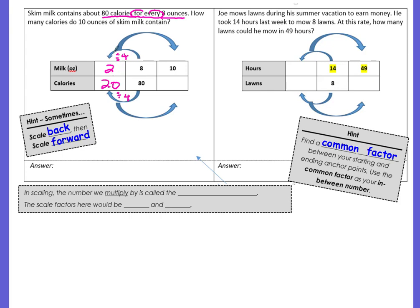Now that I have the common factor of 2, I can take this 2 and I can multiply it by a scale factor to make 10. And that scale factor would be 5. 2 times 5 is 10. Then I have to do the same thing to the 20. 20 times 5 will give us 100. So how many calories do 10 ounces of skim milk contain? They contain 100 calories. We're keeping everything proportional. Nothing is changing.